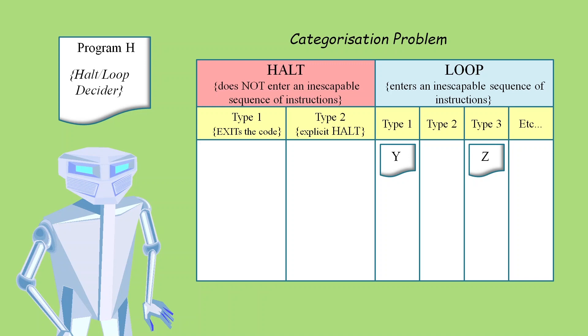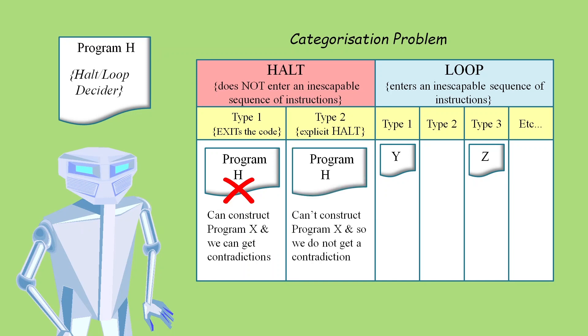Then if program H goes into the category of halts by simply exiting the code, we can show that we can construct a program X that can contradict its output. In other words, we can prove program H can't have an exit type of halt. However, if we say program H halts by doing a machine level halt, then we can't construct a program X and we no longer hit any contradictions. And so under this category, it remains a possibility that program H could exist.